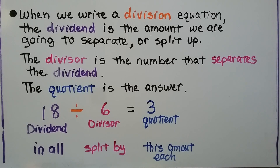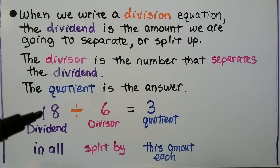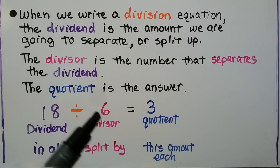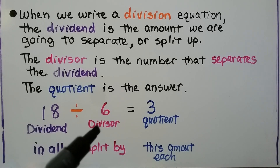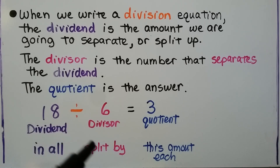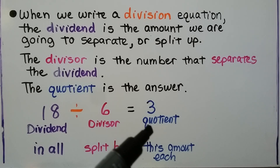When we write a division equation, the dividend is the amount we are going to separate or split up. The divisor is the number that separates the dividend. The quotient is the answer. The dividend is how many in all, the divisor is what we split the dividend up by, and the quotient is the amount each, or the answer.